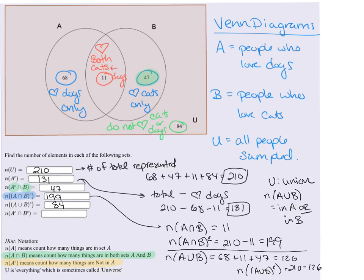And then finally, n(A^c ∩ B^c) is how many people are not in A and are also not in B. That would be the people that do not love cats or dogs. That would also be the 84.